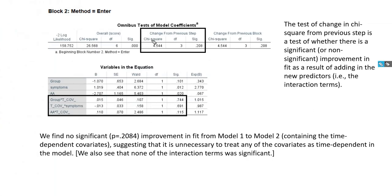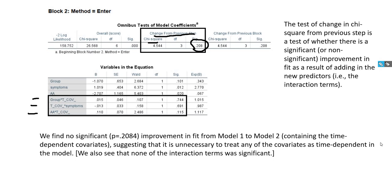At the top, the omnibus test of model coefficients shows the change from the previous step — a chi-square test comparing the model with interaction terms to the model with only the original covariates. A significant result would indicate a significant improvement in fit. In this case, the p-value is 0.208, so we do not have a significant improvement. All p-values for the individual interaction terms are also not statistically significant, suggesting it is unnecessary to treat any of the covariates as time-dependent within our model.